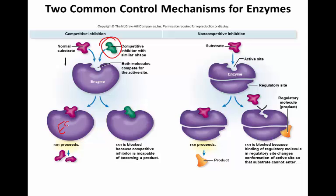Inhibition comes in two types. The first is competitive inhibition, where a competitor molecule has a shape very similar to the normal substrate that fits into the active site of the enzyme. Instead of the normal substrate fitting into the active site, the competitive inhibitor fits there and the reaction is blocked because the substrate cannot reach the active site. We have to form that enzyme-substrate complex for the enzyme to work. If the competitive inhibitor is removed, the enzyme opens back up to bond with its normal substrate and the reaction proceeds.